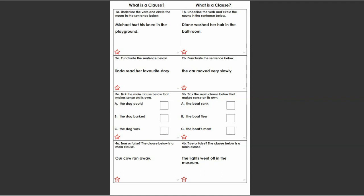You have to underline the verb. We've done lots of work on verbs before — verbs are doing words. So in this case it would be 'hurt'. You need to underline 'hurt' and circle the nouns. Nouns are names of things, and we've done lots of work on nouns as well. So in this case we have 'Michael' — a noun — and 'knee' is a noun, and 'playground' is a noun.